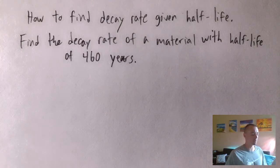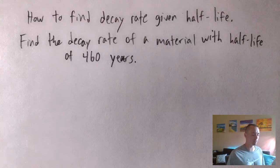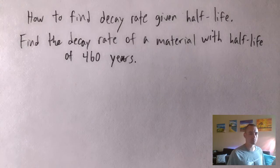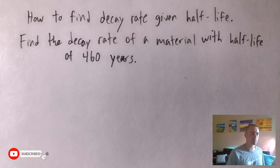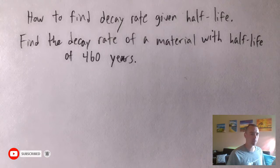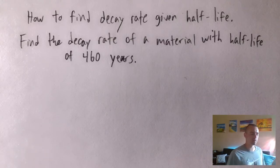The first example we're going to start with is how to find decay rate given half-life. What we're going to do is find the decay rate of a material with a half-life of 460 years. This builds off of one of the formulas on my Calculus 2 study guide or my integral calculus cheat sheet — there's a link in the description below. This builds on the exponential growth and decay portion of that cheat sheet.